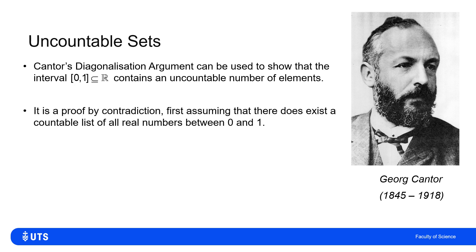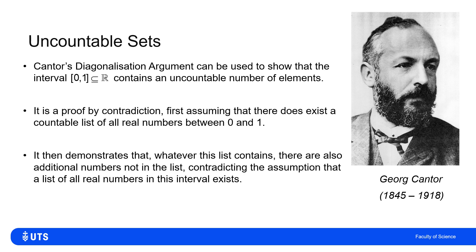The proof is a proof by contradiction. It starts by assuming that there is not an uncountable list — that in fact I can write a countable list of all real numbers between zero and one — and I'll show that assuming that leads to something contradictory. So I show that whatever this list contains, and bearing in mind I start by assuming I have a list of all of these numbers mapped to natural numbers, if I show that I'm missing some elements, then I have not got everything that should be in that list.